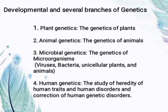Let's continue to the developmental and several branches of genetics. First is plant genetics — plant genetic resources provide opportunity for plant breeders to develop new improved cultivars with desirable characteristics. Second, animal genetics is the study of genes; genes impact the performances of animals and are passed on from parents to offspring. Third, microbial genetics covers the genetics of microorganisms — viruses, bacteria, and cellular plants and animals. Microbial genetics has played a unique role in developing the fields of molecular and cell biology.